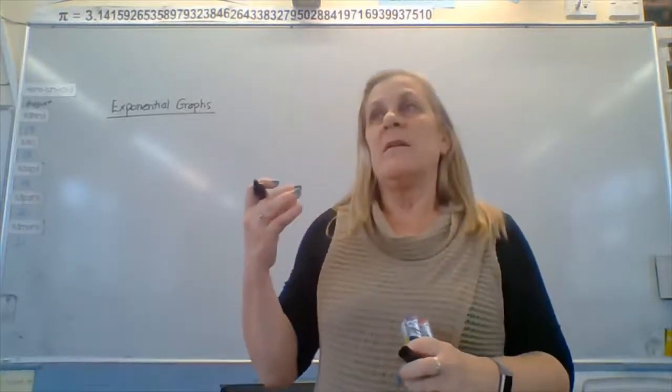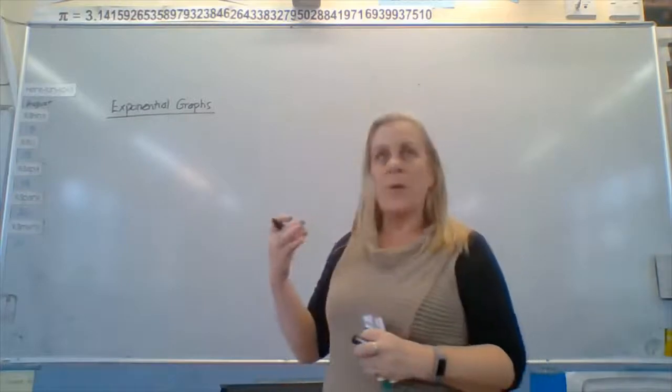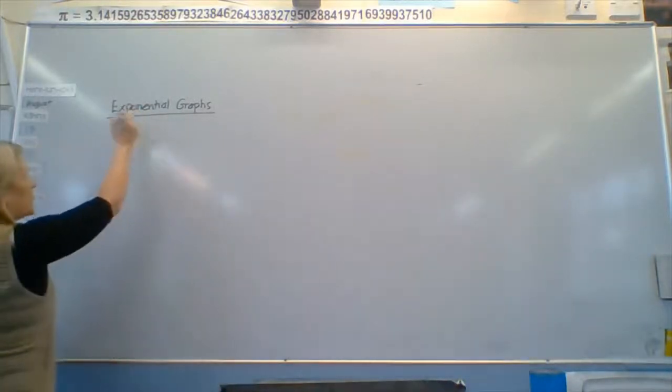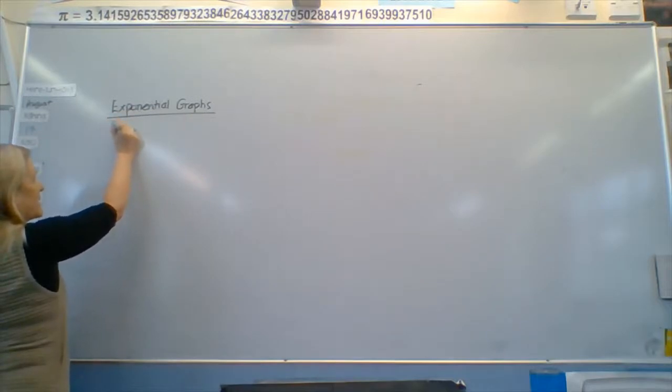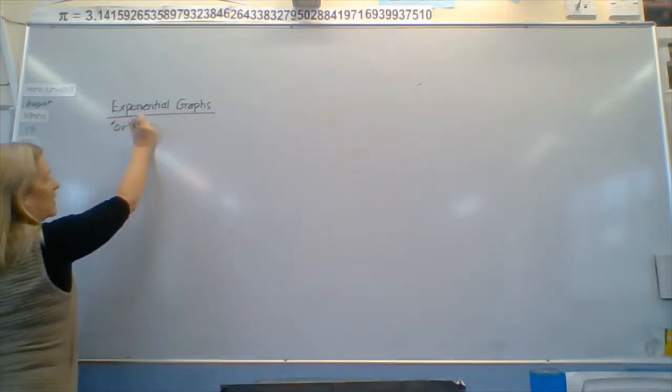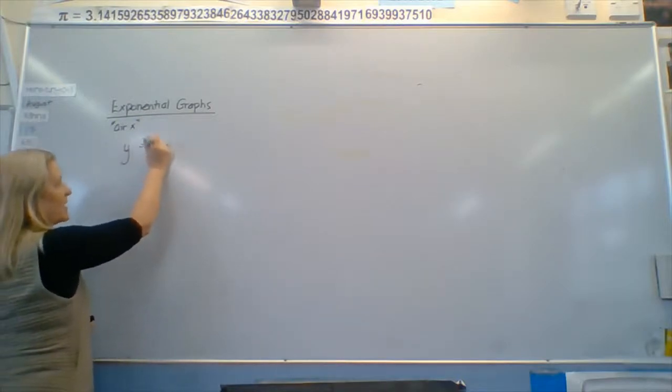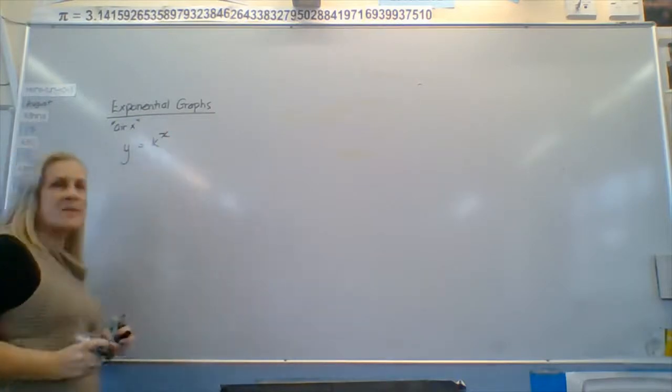Exponential graphs can be seen easily from an equation because the x is in the air. So I always say it's an exponential graph. An exponential graph. So the x is in the air. Our basic equation would look like this, with x as a power.